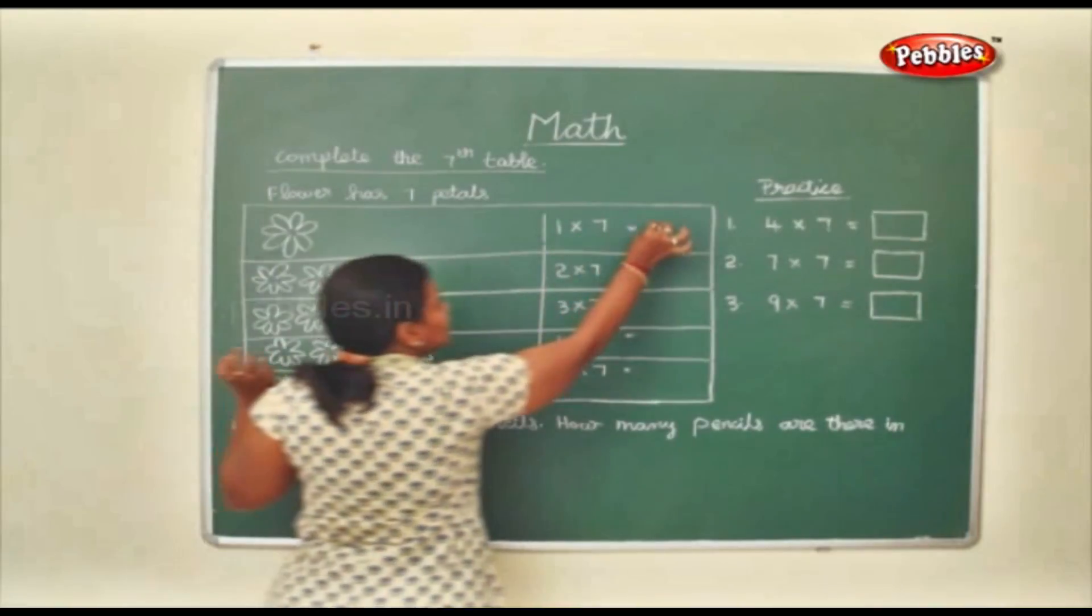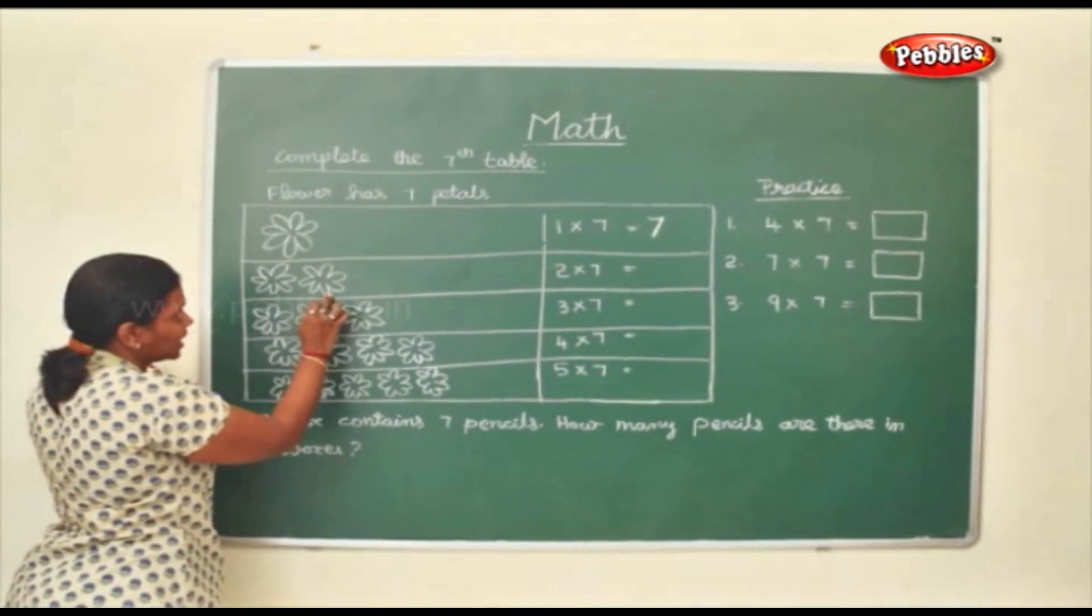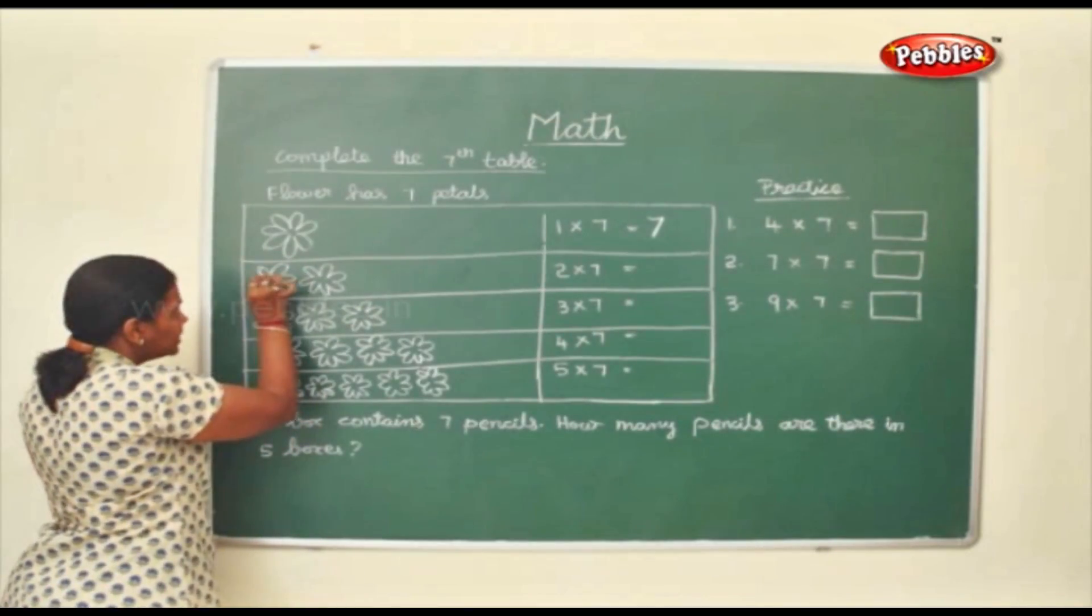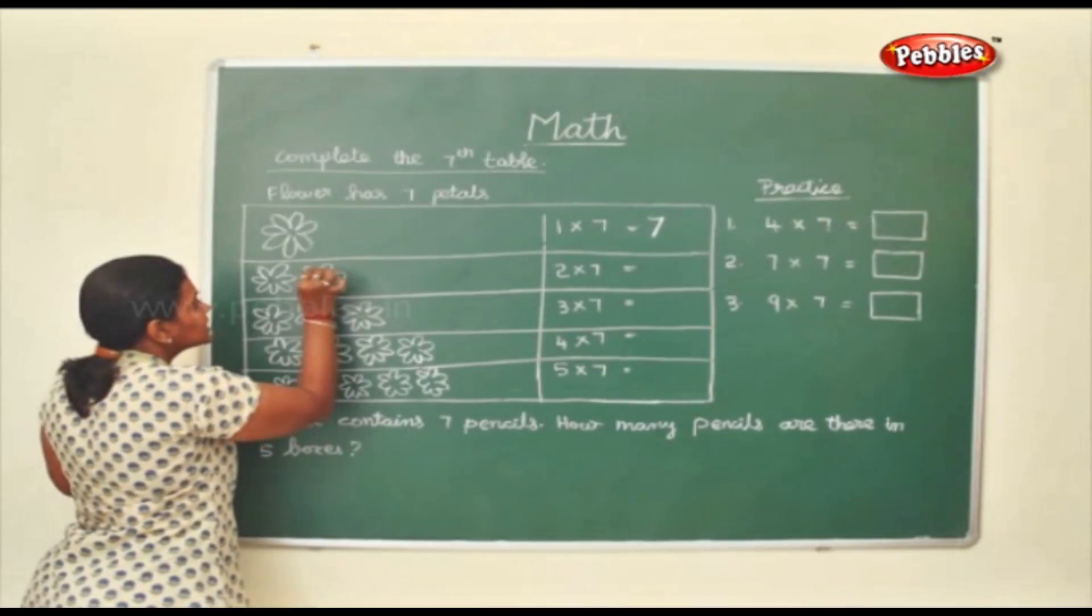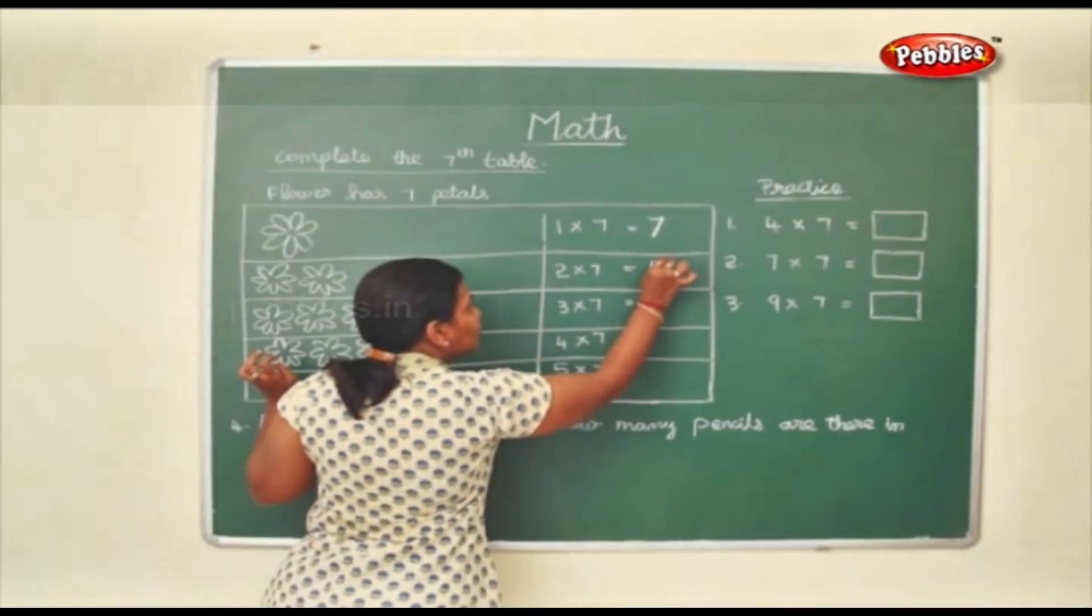So 1 flower. So 1 into 7 is 7. This flower, it has 2 flowers. So how many petals? 1, 2, 3, 4, 5, 6, 7 plus 1, 2, 3, 4, 5, 6, 7. 7 plus 7, 14. So 2 into 7 also is 14.